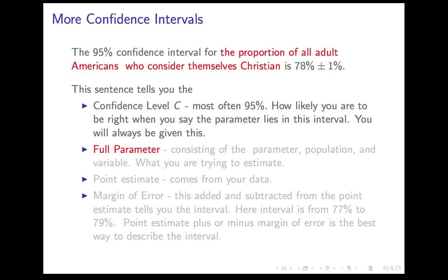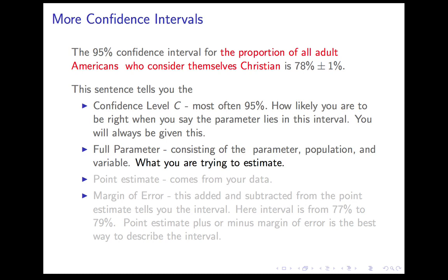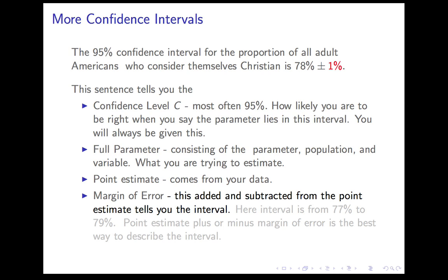The sentence also contains the full parameter — a phrase consisting of the parameter (in this case, proportion), the population (all adult Americans), and the variable (whether or not you consider yourself a Christian). This full parameter is the thing you're trying to estimate. Next, it tells you the point estimate — the thing that comes from your sample — in the format of point estimate plus or minus the margin of error. The margin of error is the quantity you add and subtract to the point estimate to give you your interval, which is always centered at the point estimate. So 78% plus or minus 1% is another way of saying the interval from 77% to 79%.